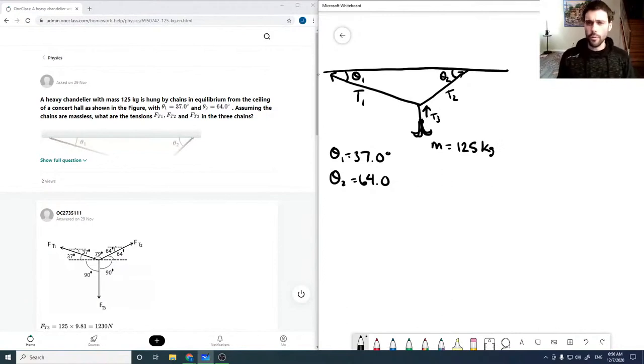The mass of the chandelier is given as 125 kilograms. And it asks to find what the tension is in each of these strings. So we've got 1, 2, and 3.